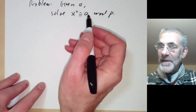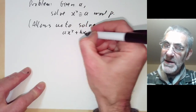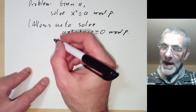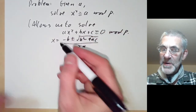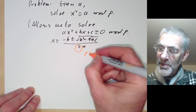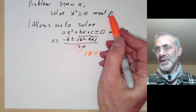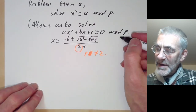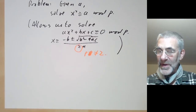If we can solve this equation, it allows us to solve any quadratic equation ax squared plus bx plus c congruent to 0 modulo p, because we can complete the square and get the formula x equals minus b plus or minus the square root of b squared minus 4ac, all over 2a — just as over the reals. There's one slight issue: we have to divide by 2, so we need p not equal to 2. But if p equals 2, there are only two possible values of x and we can just check them both. So this will give us a fast way of solving quadratic equations, and later on we will find a fast way of solving all polynomial equations over finite fields.